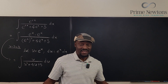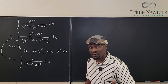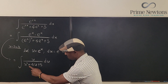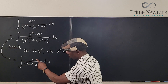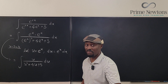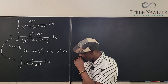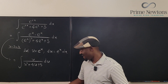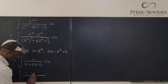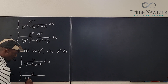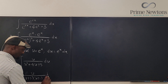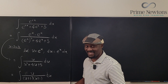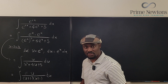Now we have a beautiful integral to compute. We could try another u-substitution, but the derivative of the denominator is 2u plus 4, so we'd have extra work. Since the denominator is factorable — u squared plus 4u plus 3 factors into u plus 3 times u plus 1 — partial fraction decomposition is our best friend. So we break this into two fractions: A over u plus 3, plus B over u plus 1.